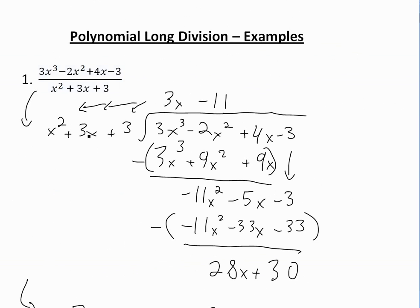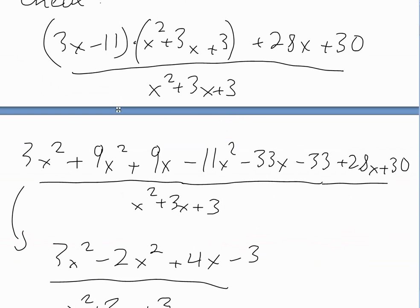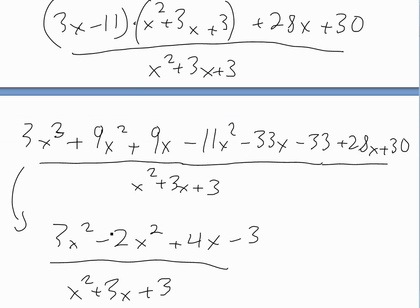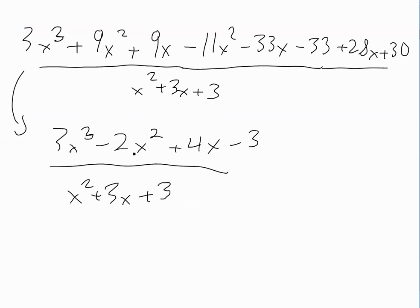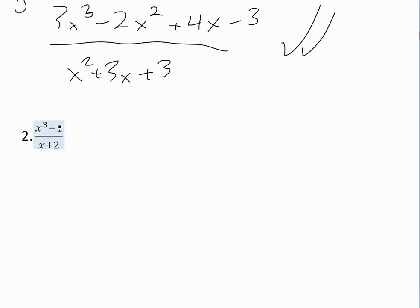That's our original problem: 3x cubed minus 2x squared plus 4x minus 3. So that confirms the answer is right. Now let's look at example 2.